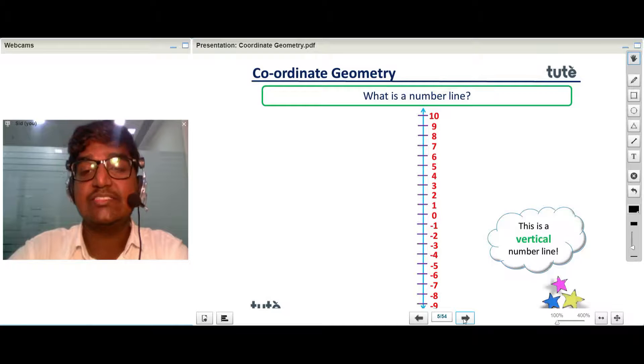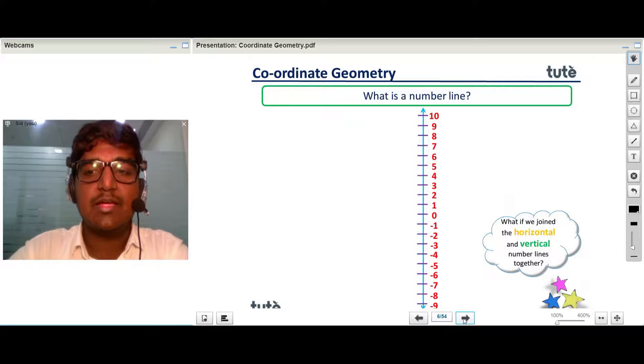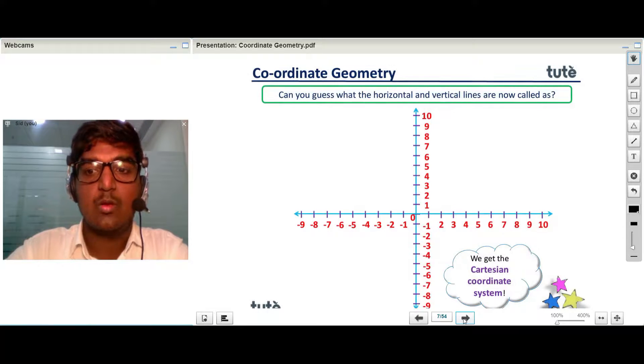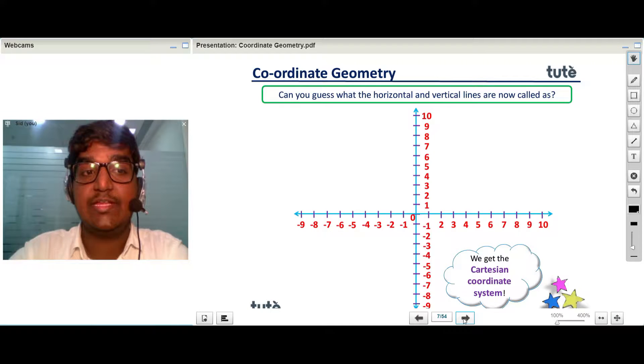Let's take another number line. This one is a vertical number line. Alright, what if we combine these horizontal and vertical number lines together? We get the Cartesian coordinate system.